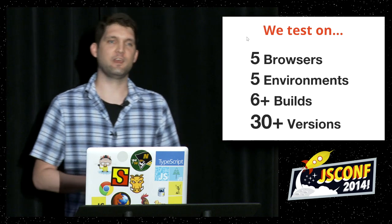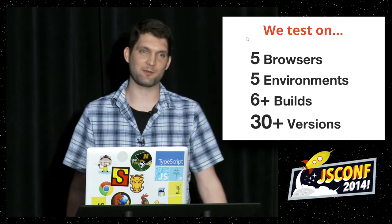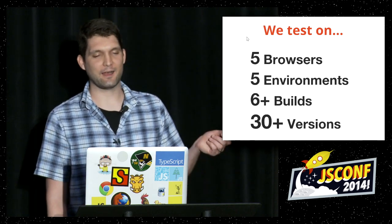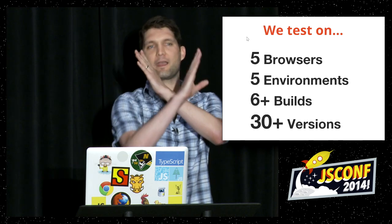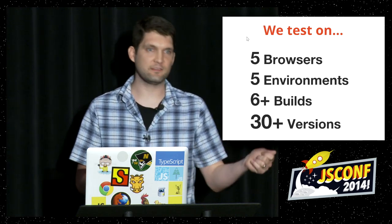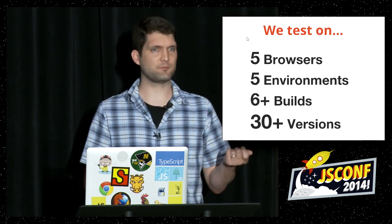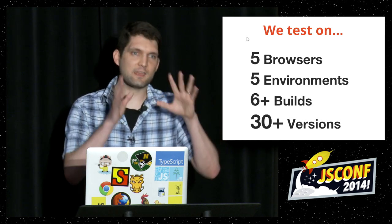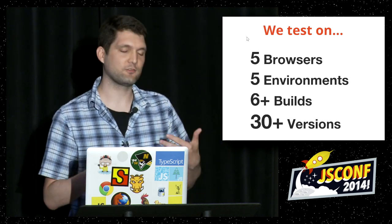I've pulled back from 30 versions, because even automating it, that's still a crazy amount of browsers. I follow the jQuery method: take the current browser and go one back. Except for things like IE, where I still support IE6, and Safari, where I support Safari 5 — mainly because things like PhantomJS still use 5-ish for its WebKit. So I make sure that I support that too.